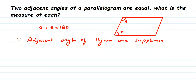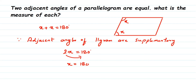So x plus x equals 180 degrees, which gives us 2x equals 180 degrees. To find x, transpose 2 to the other side: x equals 180 divided by 2. Since 2 is in multiplication, it goes to division. Therefore x equals 90.